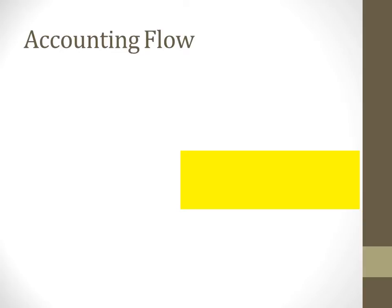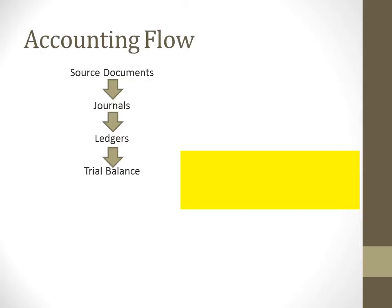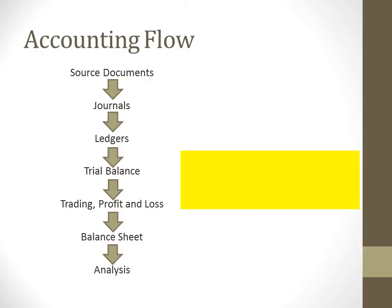Let us recap what is in the accounting flow. You must always start with source documents because these are your evidences that transactions have taken place. With the source documents, you will move on to recording them in the journals. Then after that, you will proceed to putting them in the ledgers, which is what we commonly know as T-accounts. After these ledgers are prepared, at the end of the period, we will transfer all these balances to the trial balance. From there, we will prepare the trading profit and loss accounts, and we prepare the balance sheet. And then we do analysis. This is your whole accounting flow.